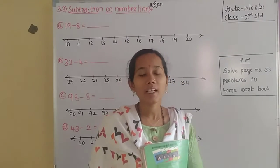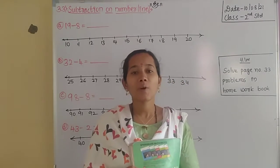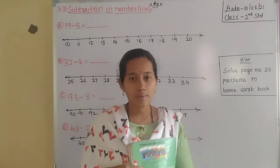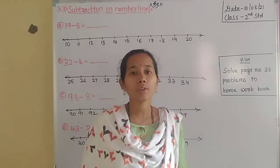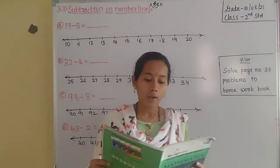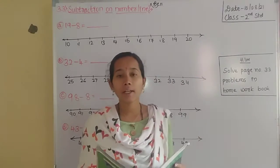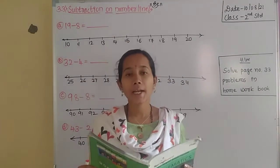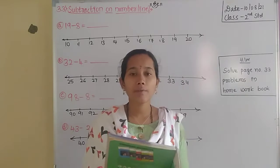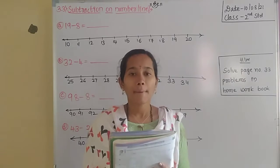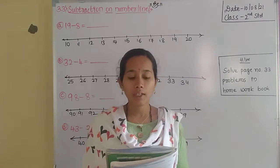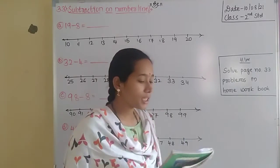In the previous class we started the topic of how to solve subtraction using different methods. We discussed subtraction by backward counting — in addition we count forward, and in subtraction we count backward. The second main method of subtraction is subtraction on the number line.